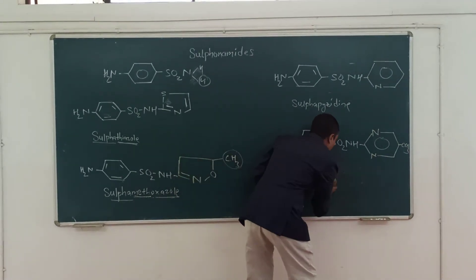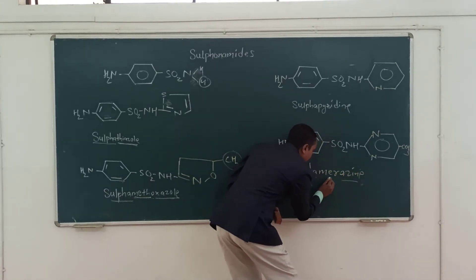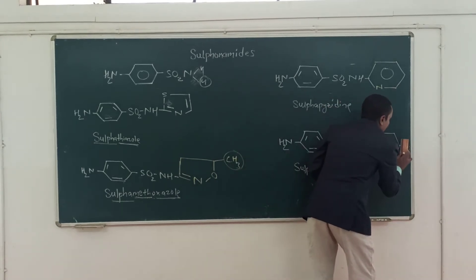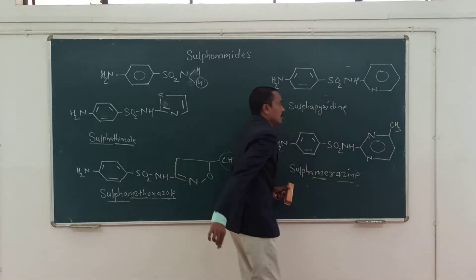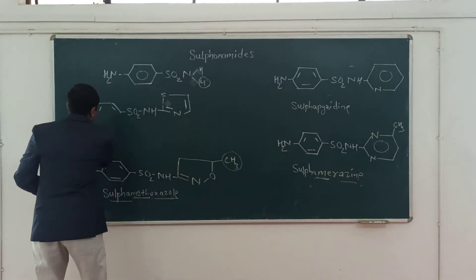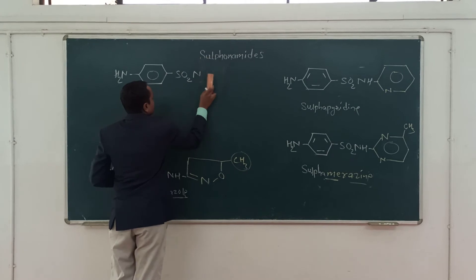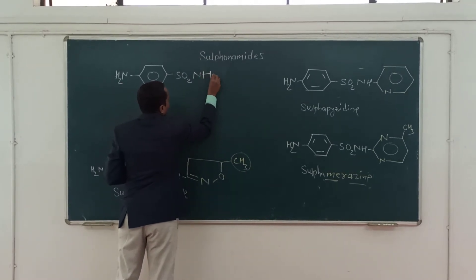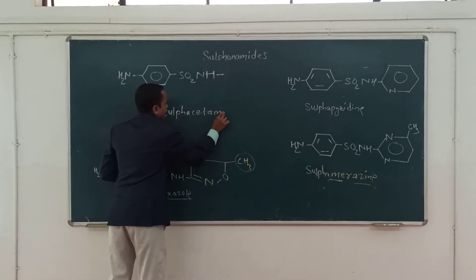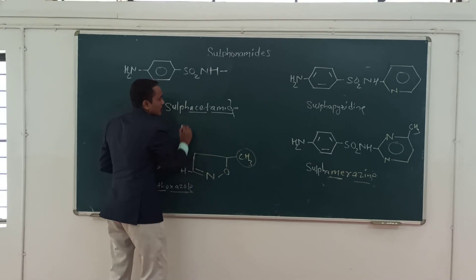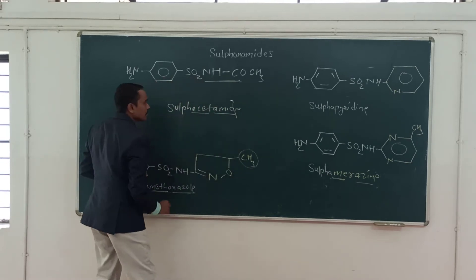Coming to the next molecule: sulfacetamide. Here the same basic molecule is there; we just have to substitute an acetyl group. Sulfacetamide — here the 'amide' indicates an acetyl group. This is the acetyl group, and it becomes amide: N-H-C-O. So it becomes amide.